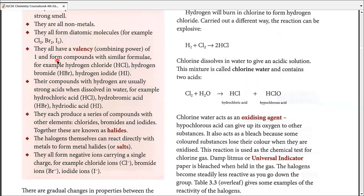They all have a valence or combining power of one, and their compounds have similar formulas. For example, hydrogen chloride has the formula HCl. Take Cl out, add Br, it becomes hydrogen bromide HBr. Take Br out, add I, it becomes hydrogen iodide HI. Their formulas and namings are pretty close with one another. Their compounds with hydrogen are usually strong acids when dissolved in water.